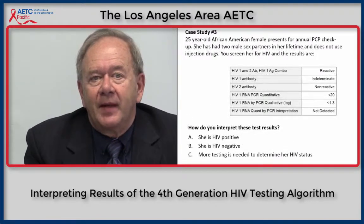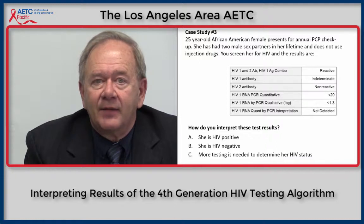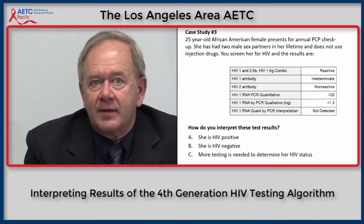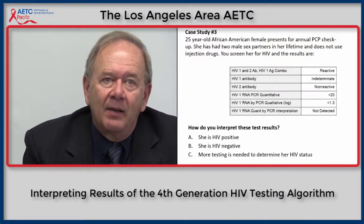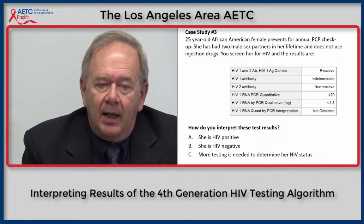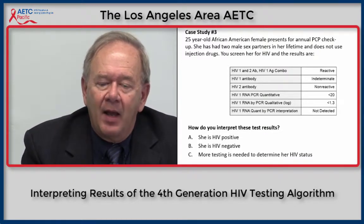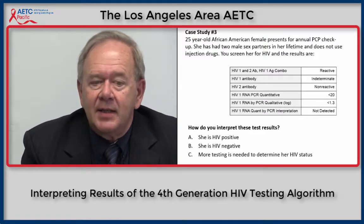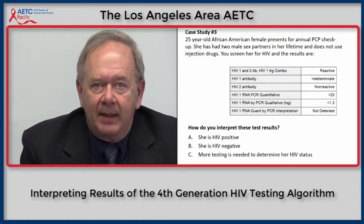Case study three: a 25-year-old African-American female presents for her annual primary care checkup. She has had two male sex partners in her lifetime and does not use injection drugs. Her test results: HIV-1/2 antigen-antibody combination assay is reactive; HIV-1 antibody result on the differentiation assay is indeterminate; HIV-RNA PCR quantitative result is less than 20 copies — log less than 1.3 — and the interpretation is not detected. The correct answer is B: this patient is HIV negative.